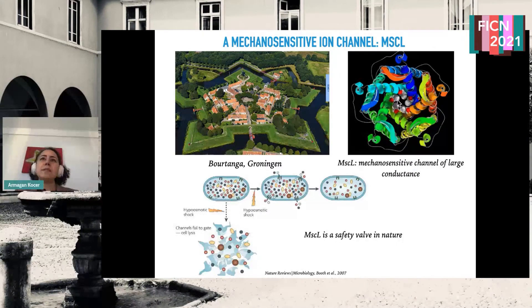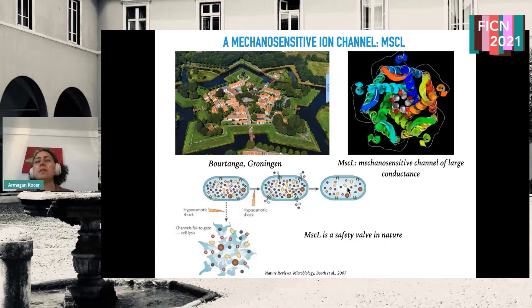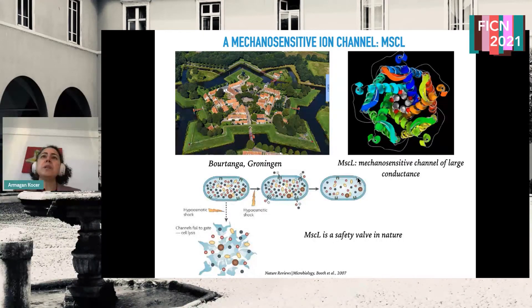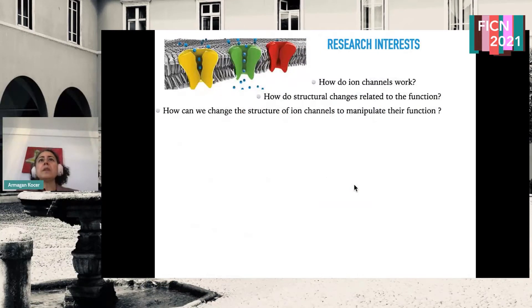This is a bacterial mechanosensitive channel. Their function is, upon a sudden hypoosmotic shock, to open and release osmolites to balance and keep the cells — to prevent cells from lysing. They sense the mechanical force, the stretch in the membrane when it becomes really not affordable anymore. They are the last resource to save the cell from lysing. In general, what we are interested in is understanding how ion channels work, and I also enjoy playing with them.